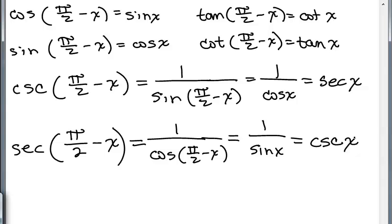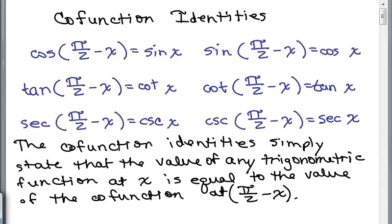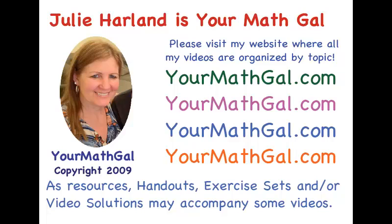So here we are — these are the six cofunction identities. Any time you see the cosine of pi over 2 minus X, you know that you can simply state that's the sine of X. So if you knew what the sine of X is, you wouldn't have to go and use the difference formula. It would be a good idea to try all these on your own. This is YourMathGal, Julie Harland. Please visit my website at yourmathgal.com, where all of my videos are organized by topic.